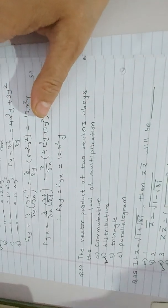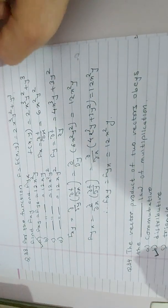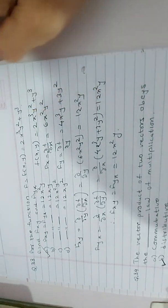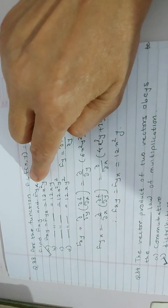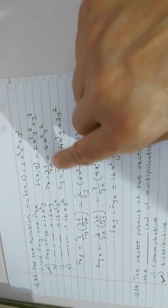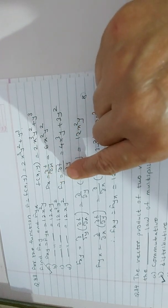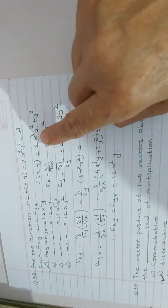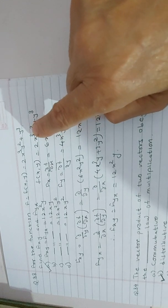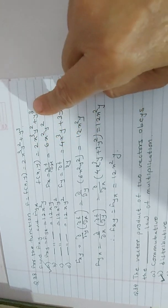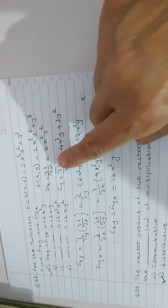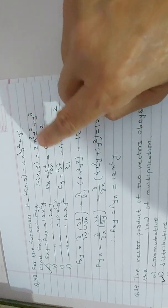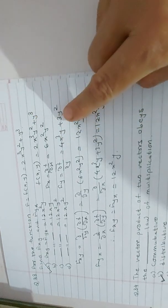Question 33: for the function f(x, y) = 2x³y² + y, find f_xy and f_yx. First find f_x: differentiate with respect to x, giving 6x²y². Then find f_y: differentiate with respect to y, giving 4x³y + 3y².